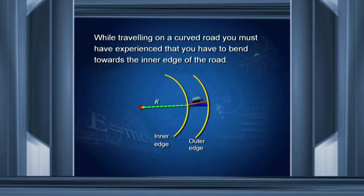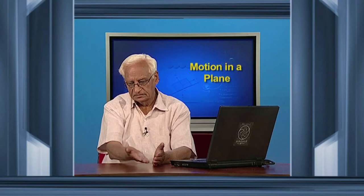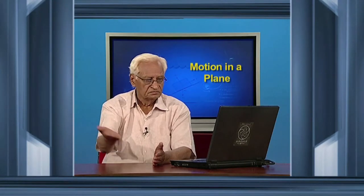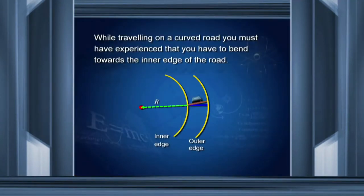While traveling on a curved road, you must have experienced that you have to bend towards the inner edge. To facilitate this, the outer edge of the road is built slightly higher than the inner edge — this is called the banking of roads. The road is not flat but shaped at an angle. Here, I have shown this: the outer edge of the road, the radius R of the curved road, and how the road is banked with the car on that banked road.